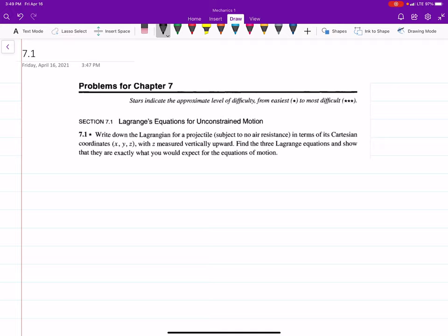So 7.1 is a pretty good beginning Lagrangian equation, or Lagrangian question to work through. It says, write down the Lagrangian for projectile with no air resistance in terms of the Cartesian coordinates with Z measured vertically